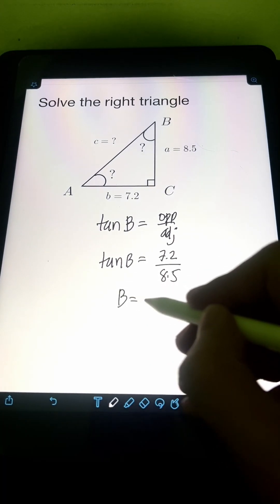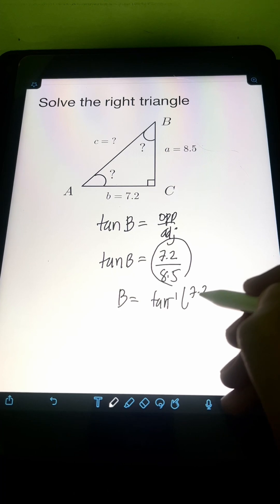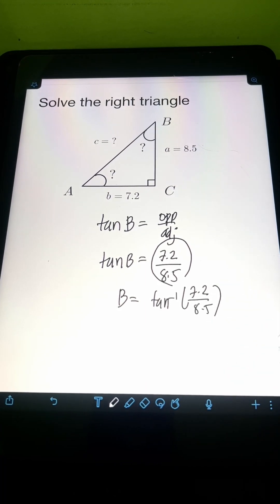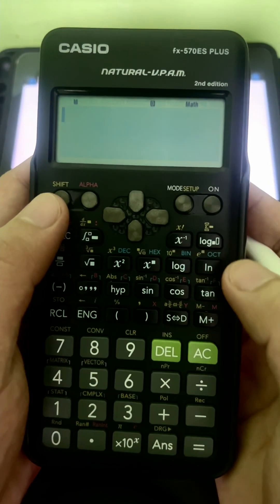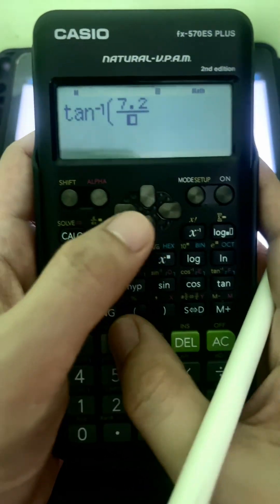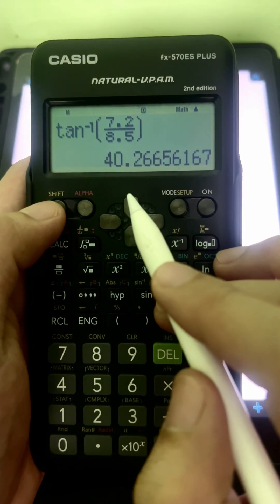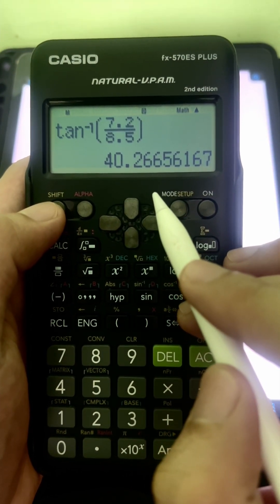To find angle B, we just need to get the arctangent of this ratio, 7.2 over 8.5. Again, inputting that in the calculator, so we will have arctangent of 7.2 over 8.5. So we will get approximately 40.27 degrees.